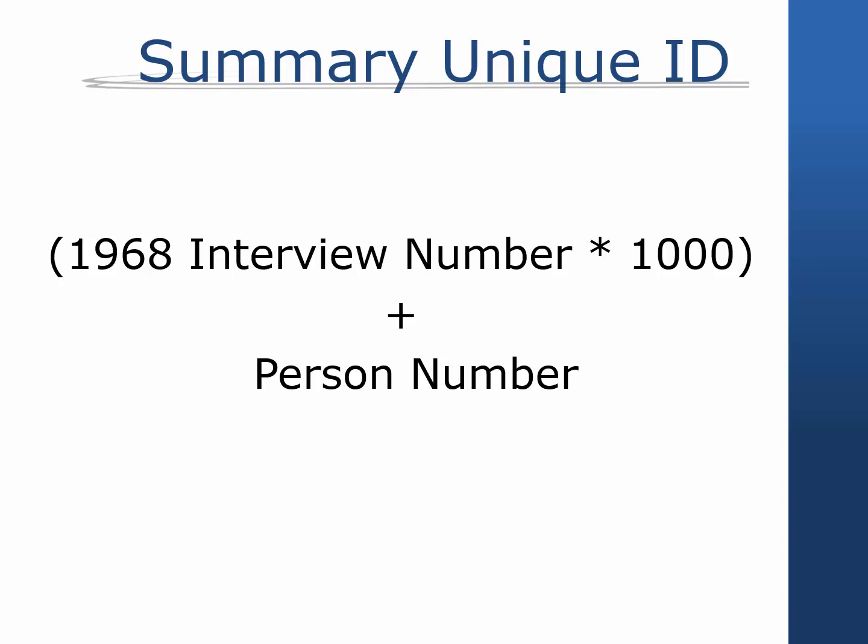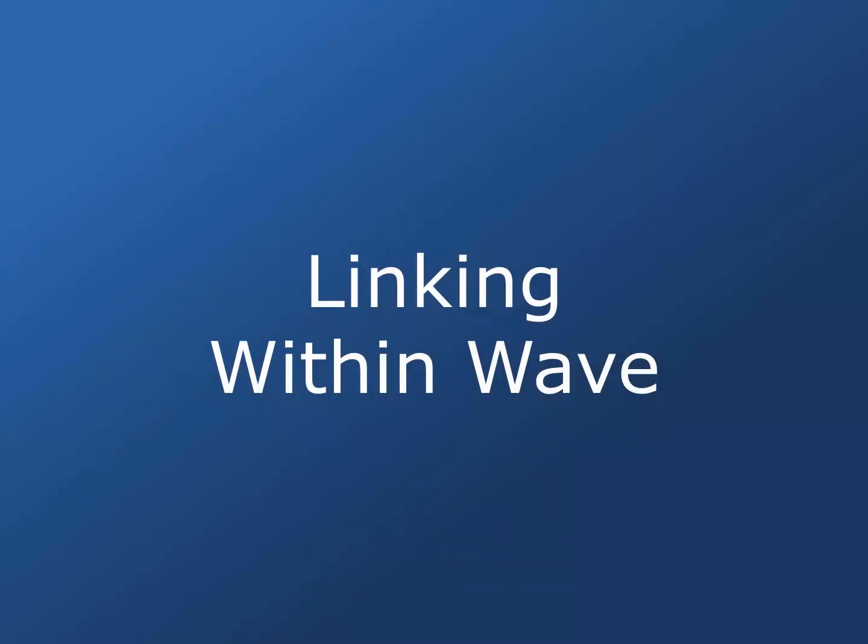The combination of the 68ID and person number is the same across all waves in which an individual appears, so it can be used to link data for individuals across years. Note that an individual's person number may change from release to release as new information is collected about their relationship to others in the study. For the most accurate merges, we therefore recommend using the latest release of data. To summarize, there are two types of identifiers — family and individual — and two timeframes: yearly and cross-wave. Depending on your unit of analysis and the waves of data you are analyzing, you may need to use more than one of these identifiers.